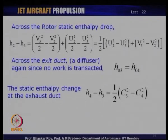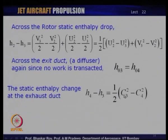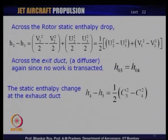The static enthalpy change can be written in terms of the relative velocity change and rotor speed changes. Across the rotor, the exit duct is not doing any work, so total enthalpy is constant and the static enthalpy change shows up as a change in velocity. C3 is normally higher than C4 — it diffuses from C3 to C4. The exhaust duct is quite often a diffusing duct, and that is the only diffusion taking place in this radial turbine.